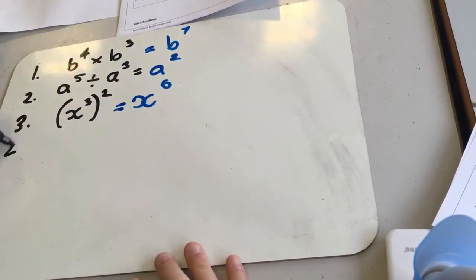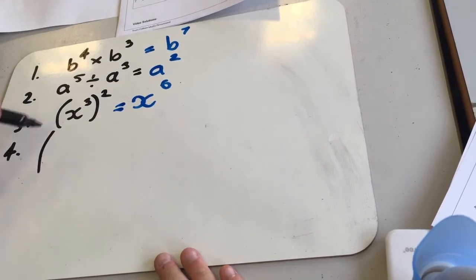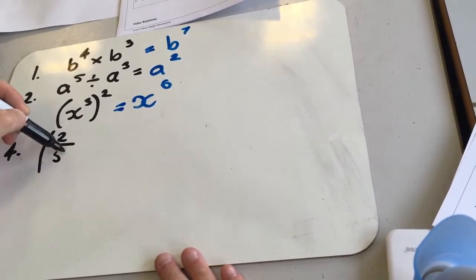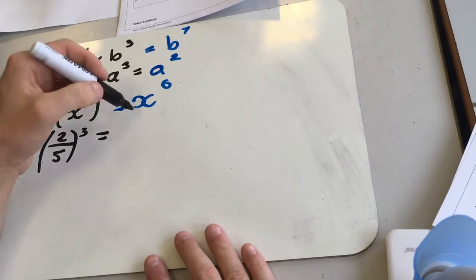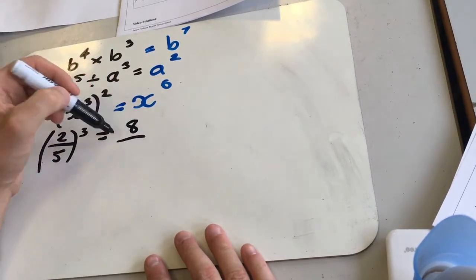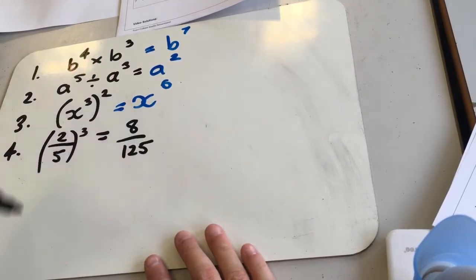Question 4, we've got 2 over 5 cubed. So we're going to cube the top and then we're going to cube the bottom as well. So 2 cubed gives us 8 and 5 cubed gives us 125 for that one.